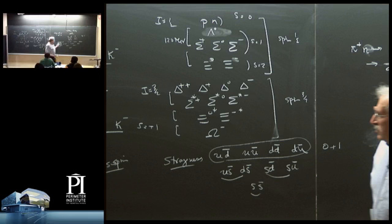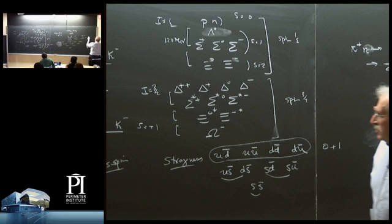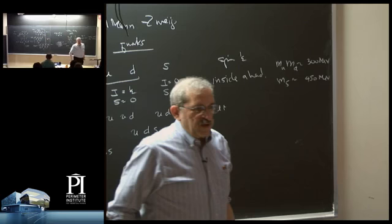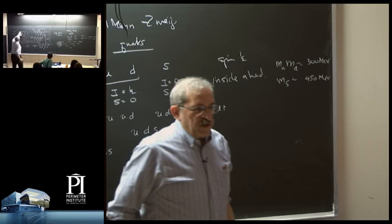If we give the strange quark a little more mass—say the mass of the up and down quarks is about 300 MeV inside a hadron, and the mass of the strange quark is something like 450 MeV—then we also explain the mass pattern. Every time I add a strange quark, I add another 120 to 150 MeV of mass. That explains the mass pattern of every multiplet except one, which is a special case I'm going to devote a whole lecture to next week.